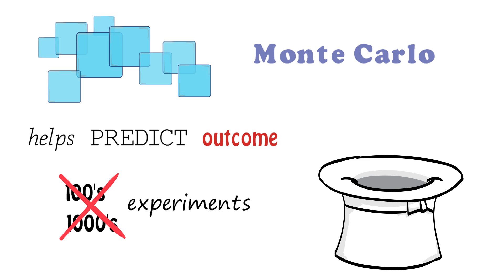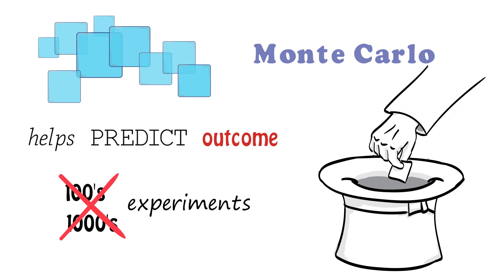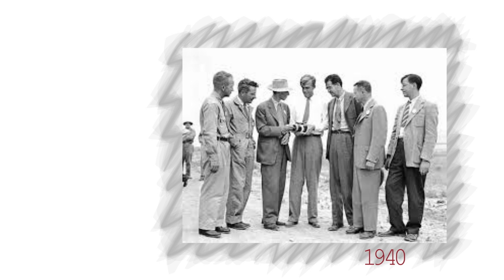Monte Carlo does this by using random sampling in situations where collecting data is impossible or expensive. Monte Carlo was pioneered by Manhattan Project scientists in the 1940s who wanted to simulate atomic events without using up precious uranium.